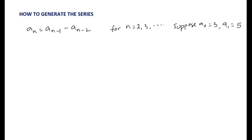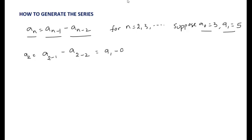Now we will see how to generate the series. The given recurrence relation is aₙ = aₙ₋₁ − aₙ₋₂ for n ≥ 2, so n takes values 2, 3, 4, and so on. The initial values supplied are a₀ = 3 and a₁ = 5. To calculate a₂, we substitute n = 2: a₂ = a₁ − a₀ = 5 − 3 = 2.